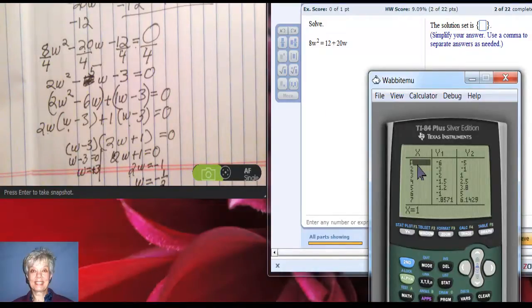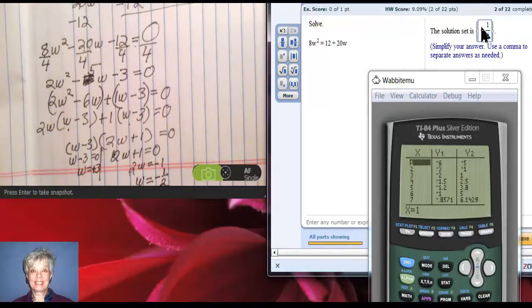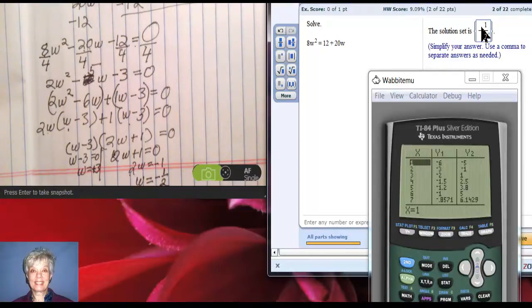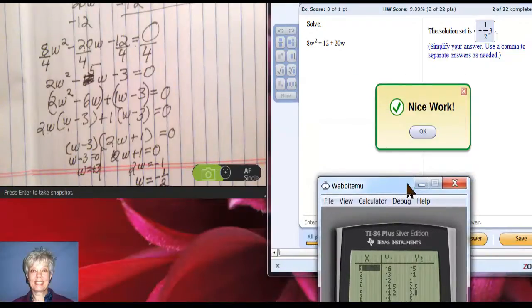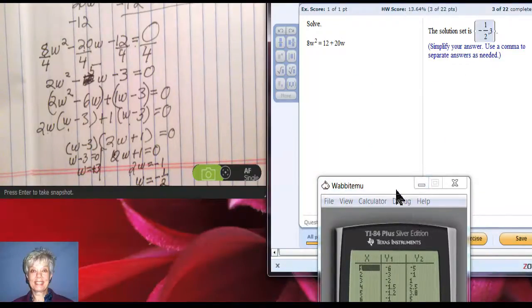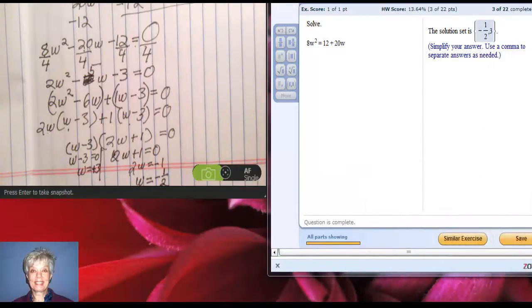Let's see if that's right. Okay. Negative 1 half. Hit my right arrow key. Put a comma. And then 3. Move my calculator. Check answer. Ooh, looks good. Yes. Okay. That is how you solve quadratic equations.